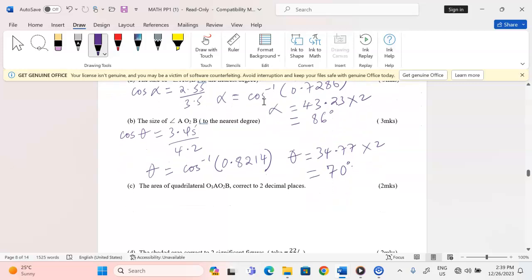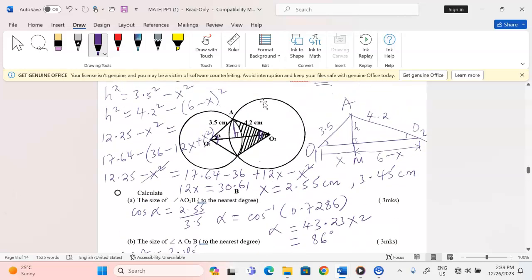Now with the two angles, we can proceed and find area of the quadrilateral O1AO2B, the quadrilateral provided here. Now that we are having the two angles, we can use two triangles here from O1AB. We can get the area of that triangle and also the area of the other triangle and we add.